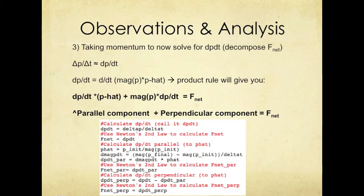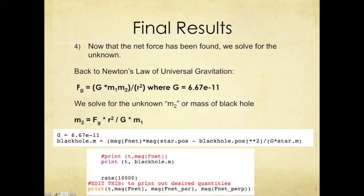Together, the parallel and perpendicular components will add up to the total net force, which will help us get one step closer to solving for our unknown, the mass of the black hole. Now that the net force has been found, we can solve for our unknown. We rearrange Newton's law of universal gravitation to do just that. We place the rearranged fundamental principle into our computational model, and the model then prints, or in other words, calculates the mass of the black hole.